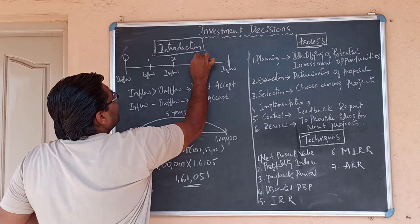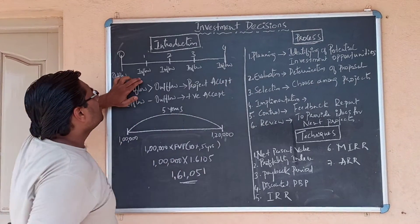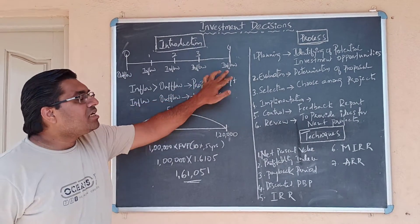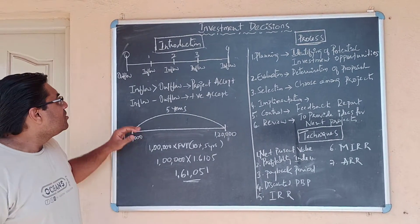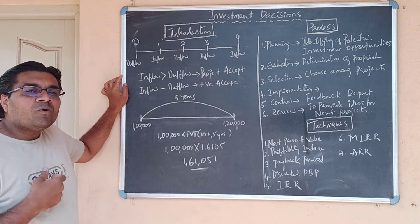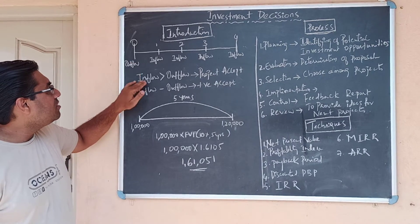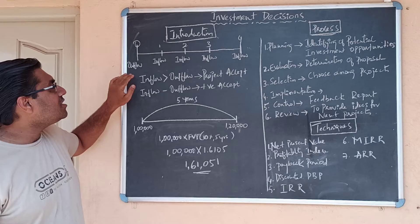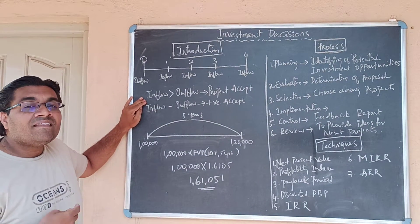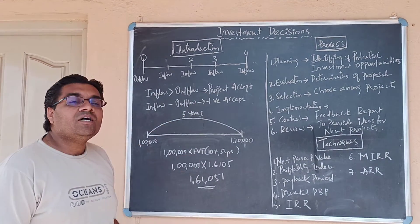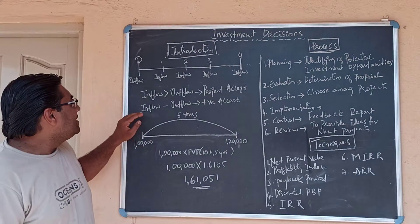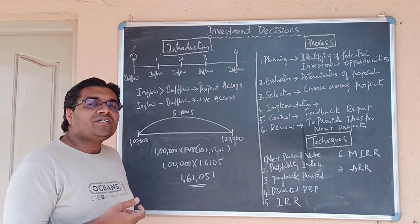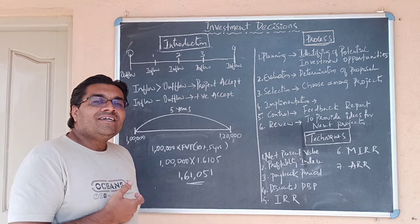First, Second, Third, Fourth year — we have the amount of inflows. In the last four years, we have the project completed. We are going to deal with all inflows. If those inflows are greater than the outflows, the net addition to the project will be positive and we accept.